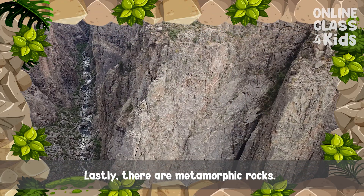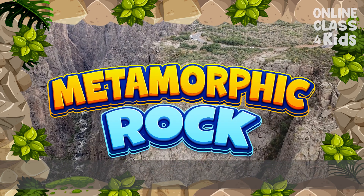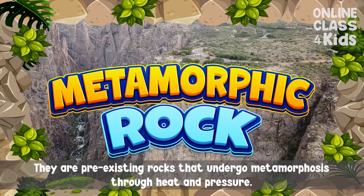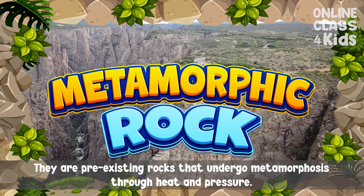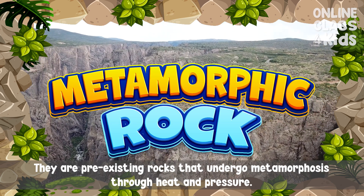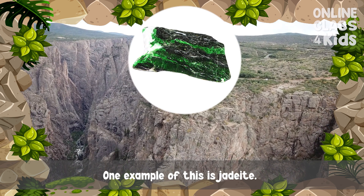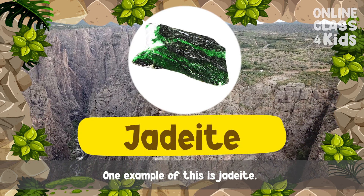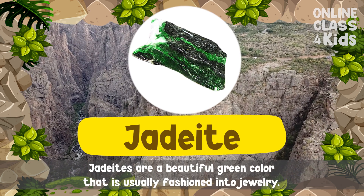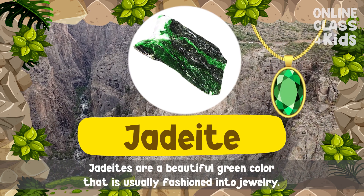Lastly, there are metamorphic rocks. They are pre-existing rocks that undergo metamorphosis through heat and pressure. One example of this is jadeite. Jadeites are a beautiful green color that is usually fashioned into jewelry.